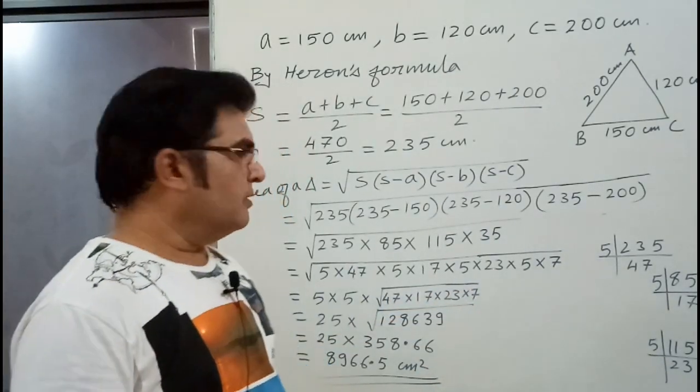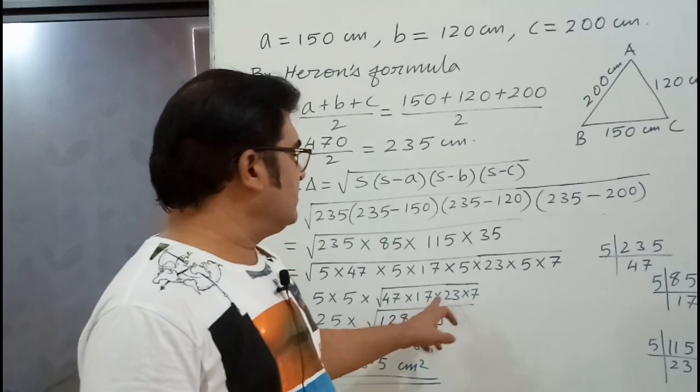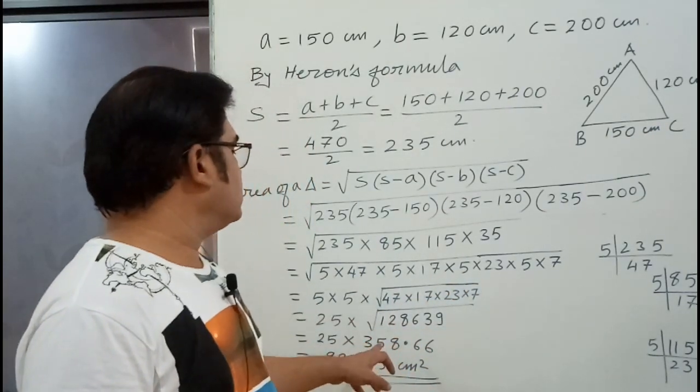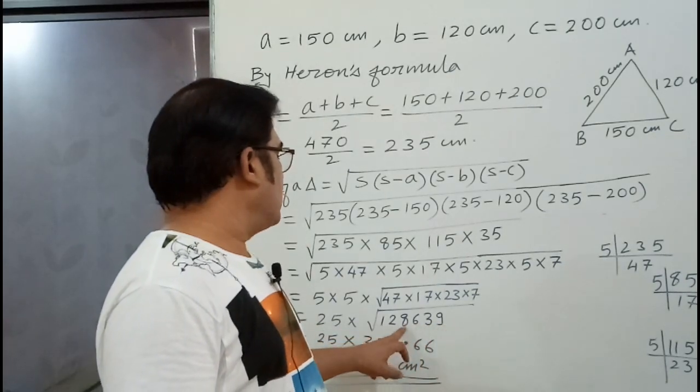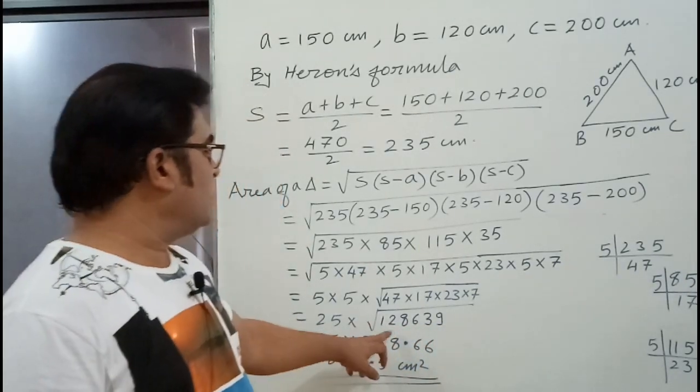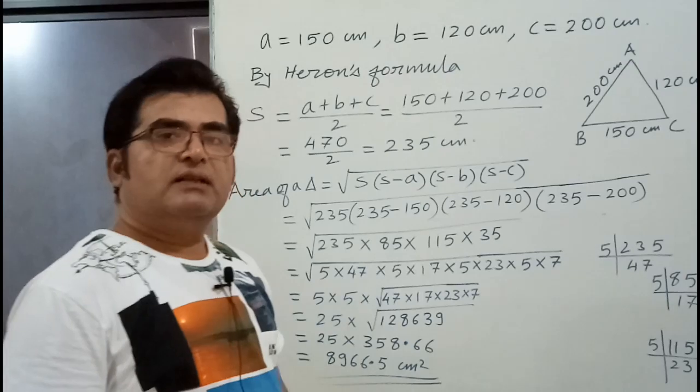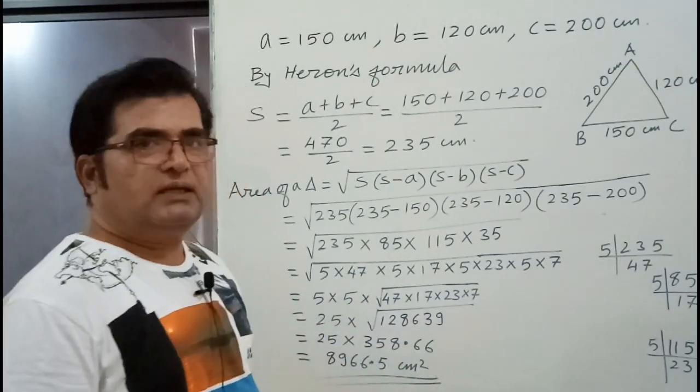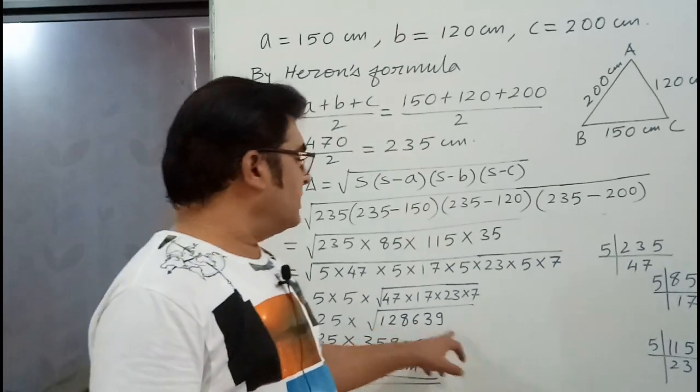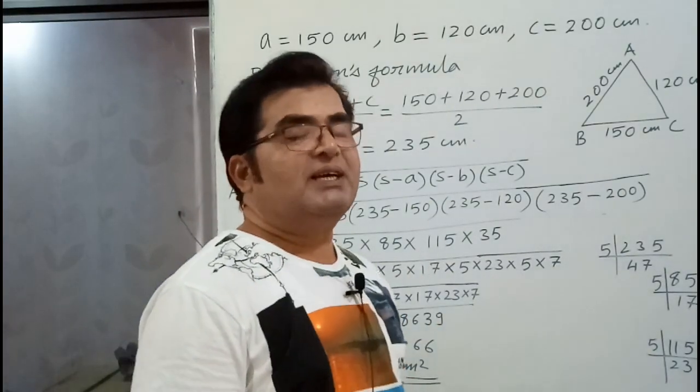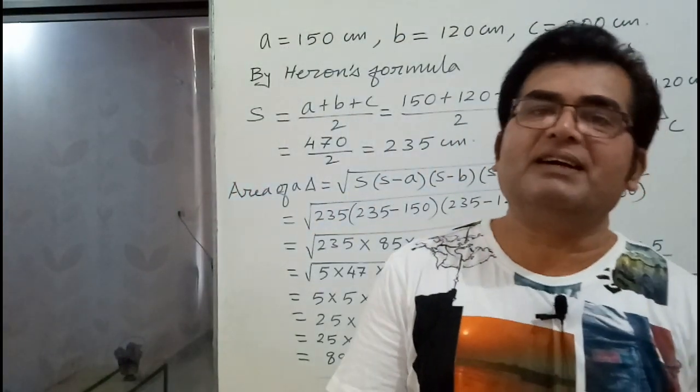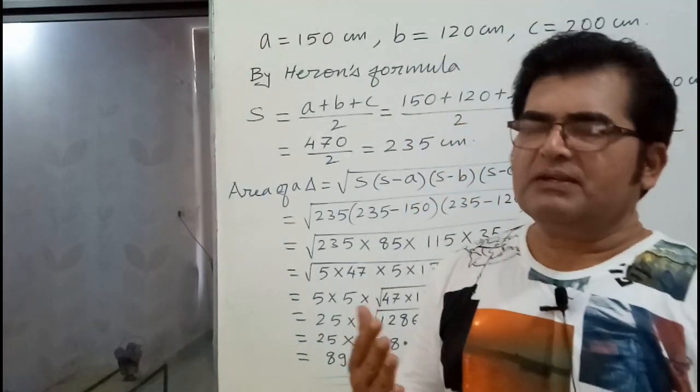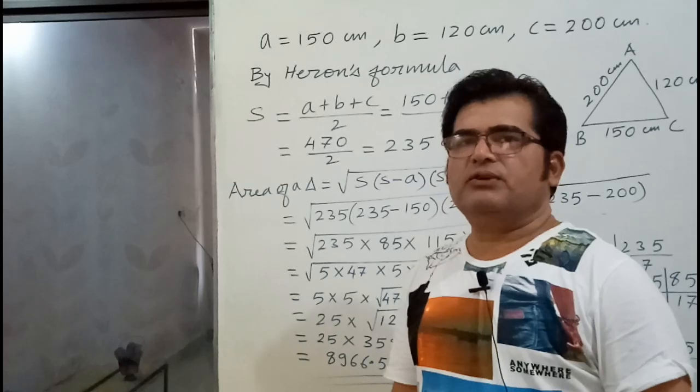Then, you have to make product of it. Multiply them. 47 into 17 into 23 into 7. Then, you have to find it by the long division method. Correct to 2 places of decimal, you find.